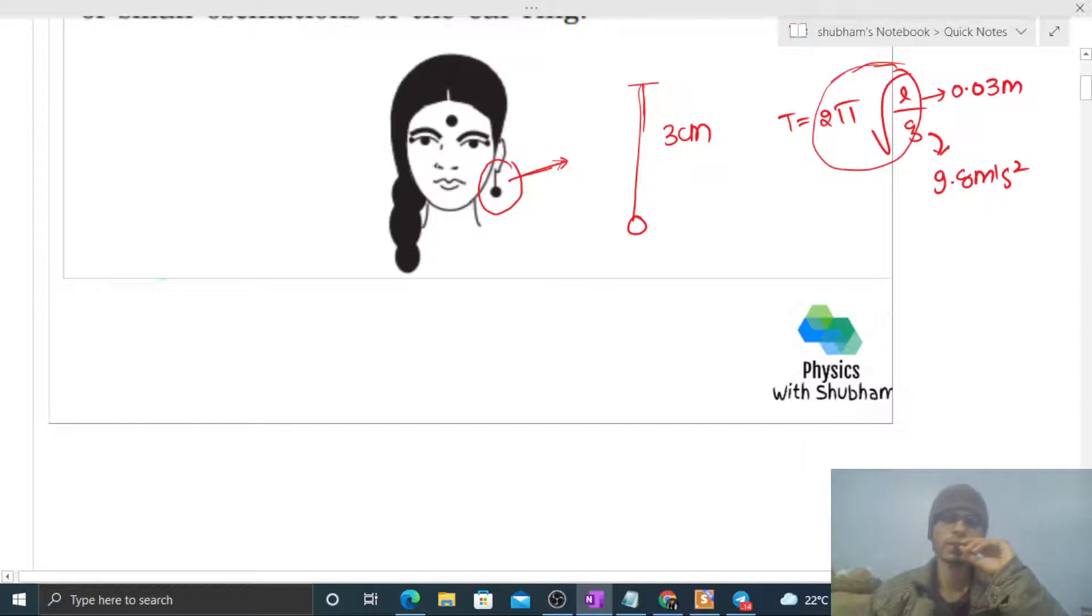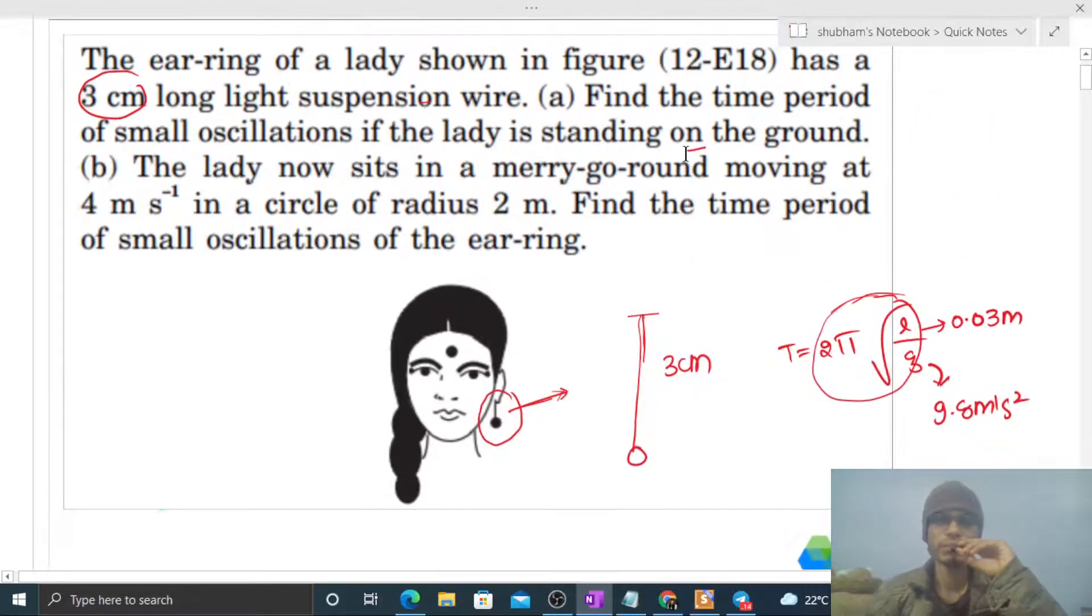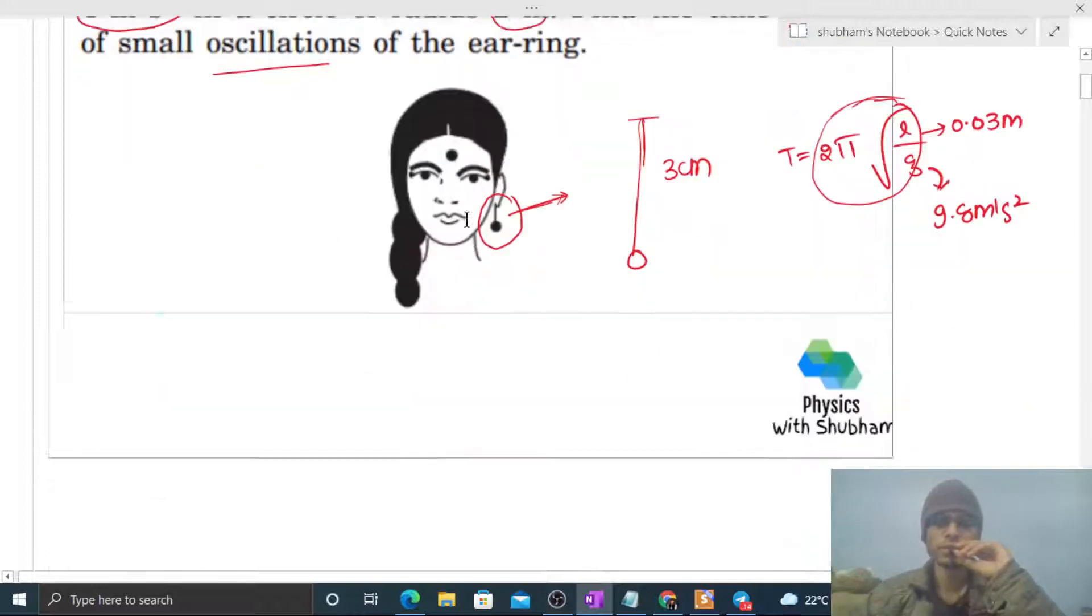Part B: The lady now sits in a merry-go-round moving at 4 meter per second in a circle of radius 2 meter. Find the time period of small oscillations of the earring.